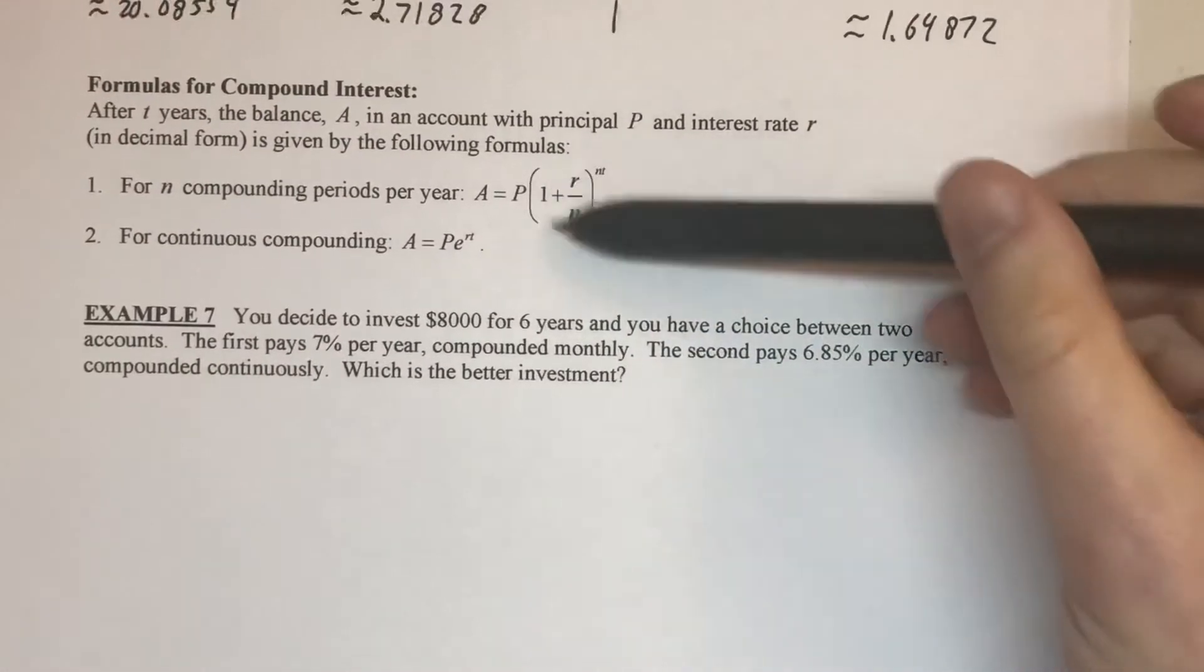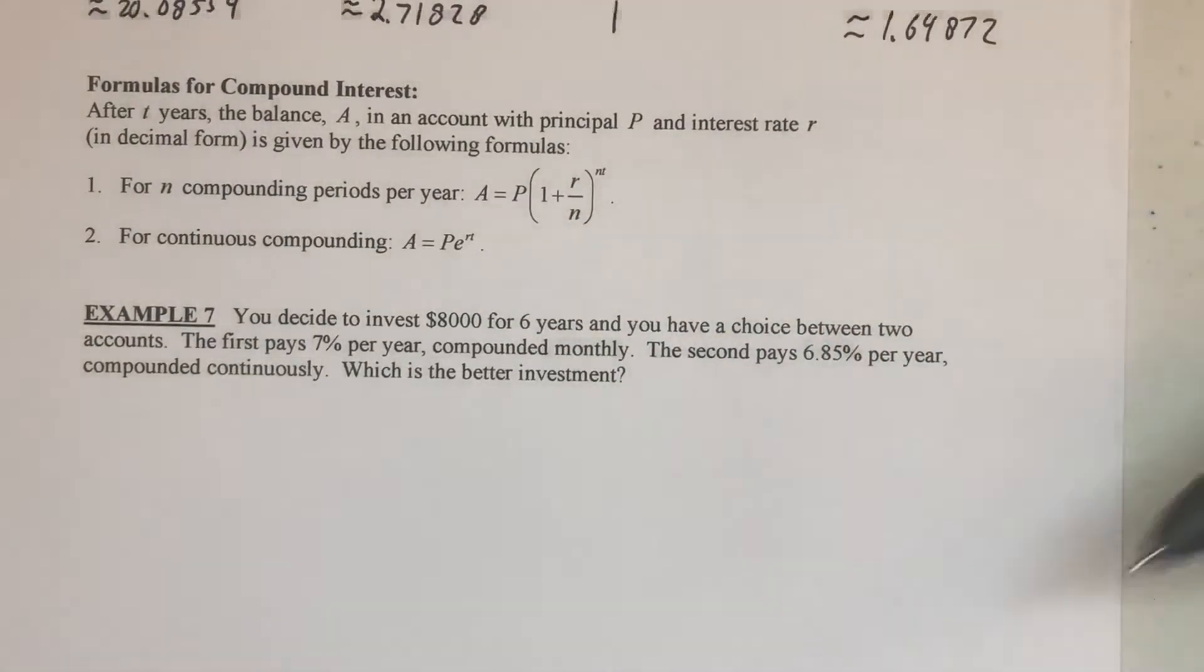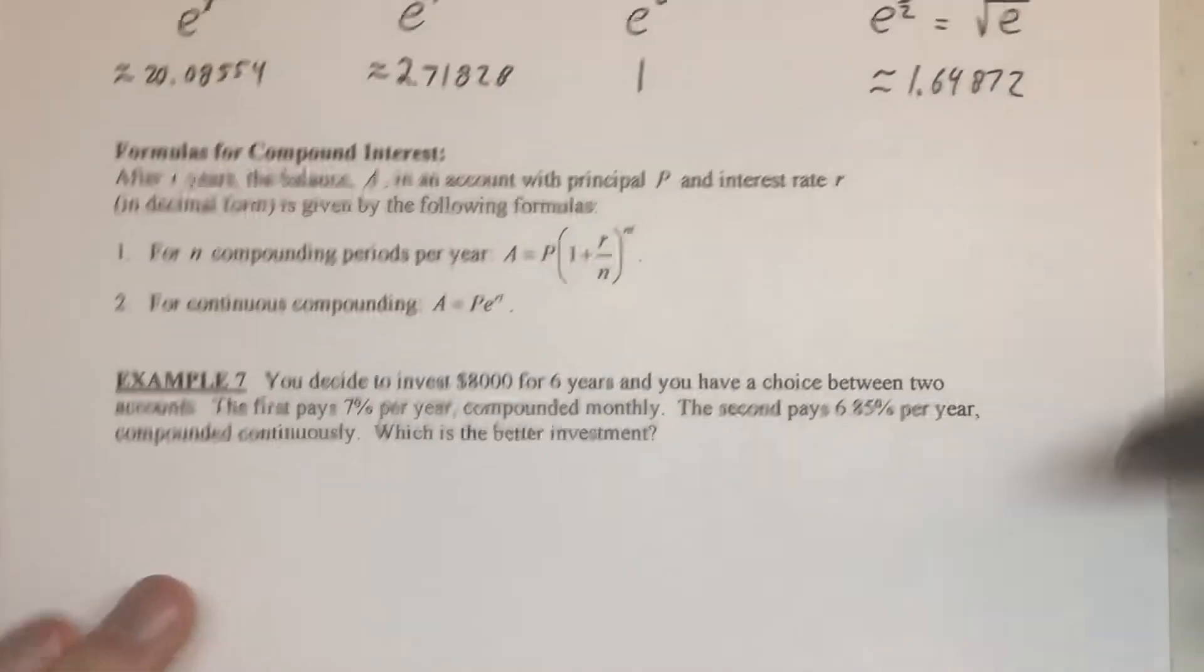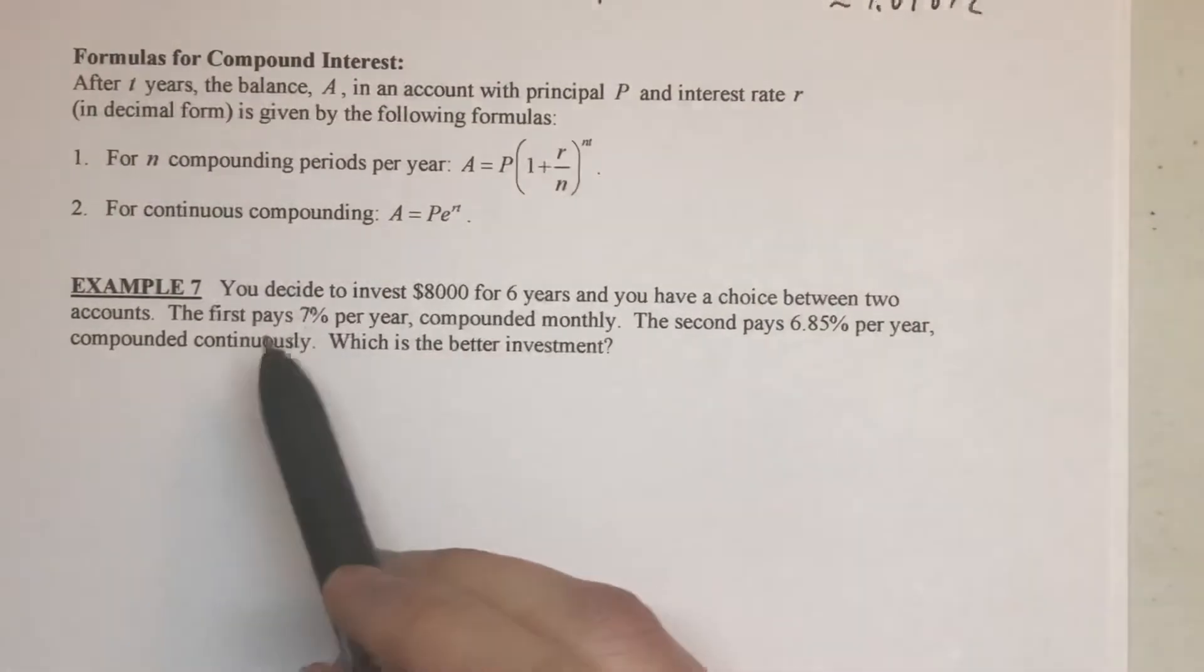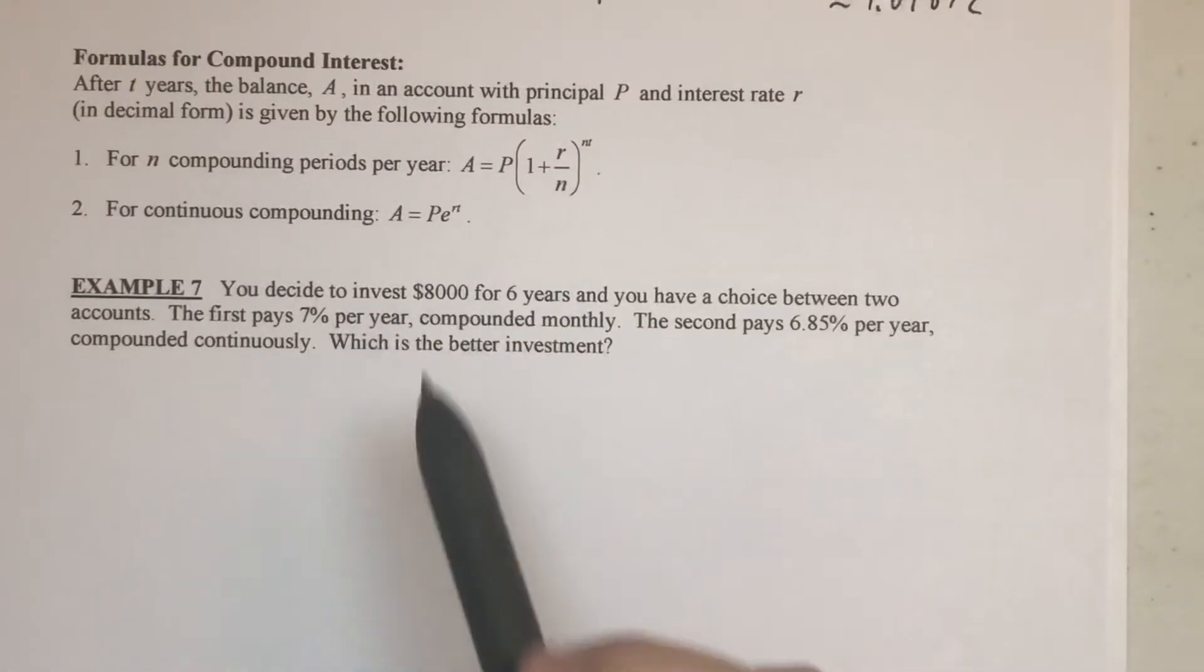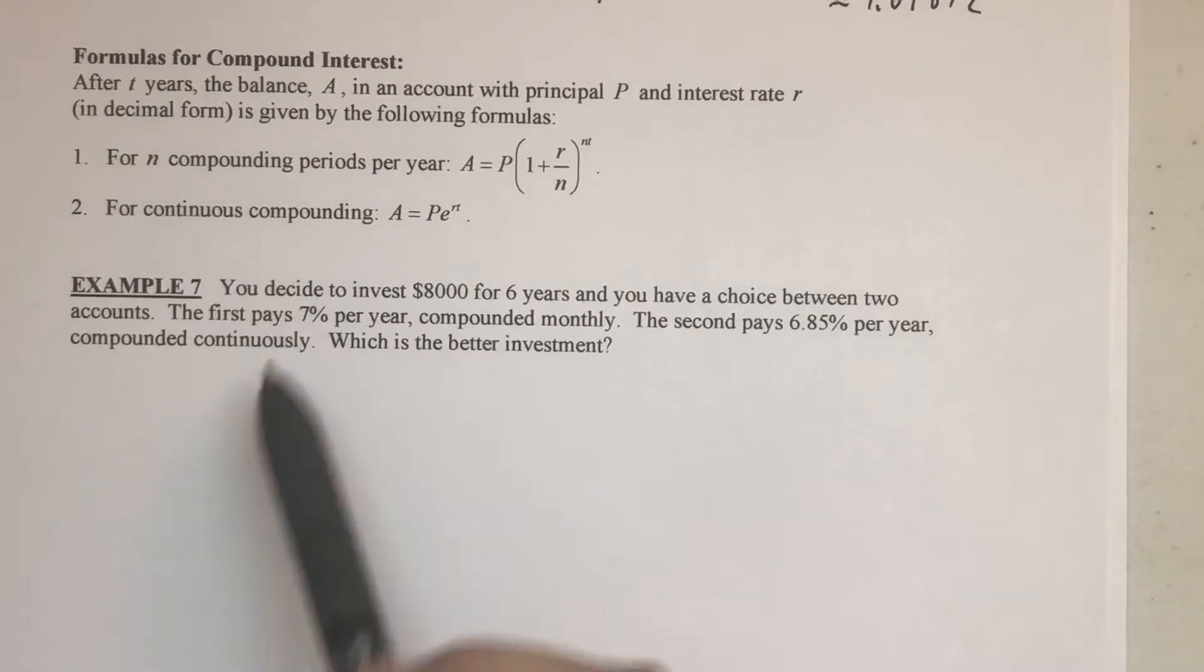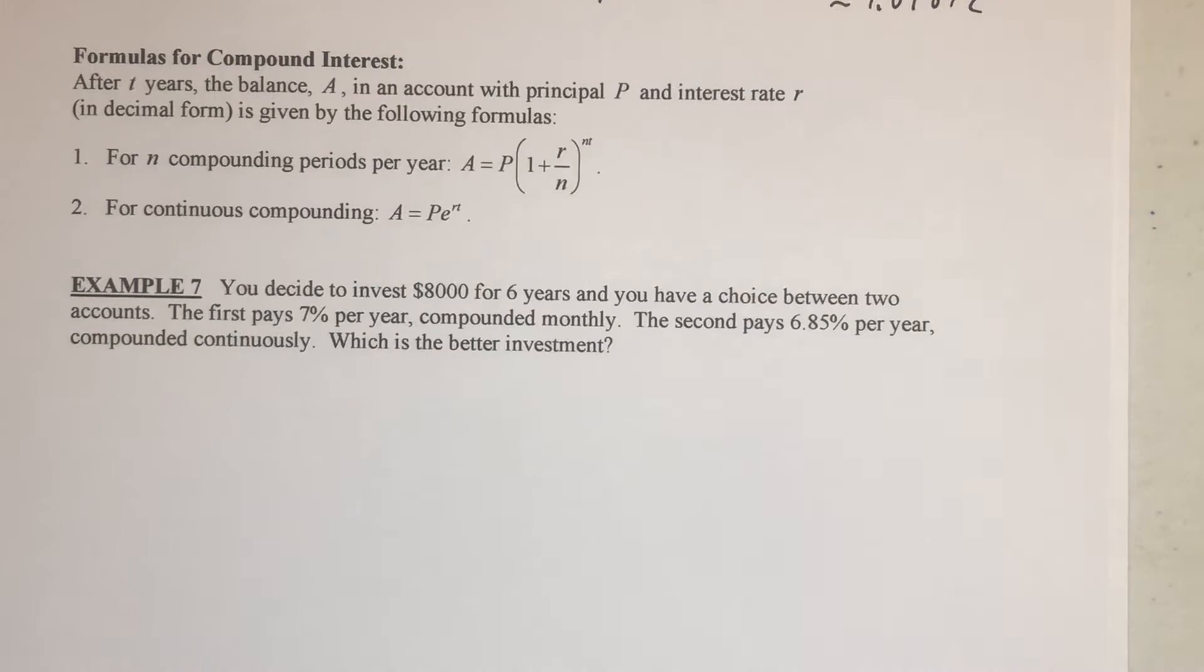There's some tie-in with how this formula turns into this formula as you look at having an infinite number of compounds, compounding sessions per year. But as far as how to use the formulas, we're just plugging in numbers. So, it says we decided to invest $8,000 for six years, and we have two choices, two different accounts. One that pays 7% compounded monthly, one that pays 6.85% compounded continuously, and which one's better? So, we're looking for the accumulated value, that's the A.